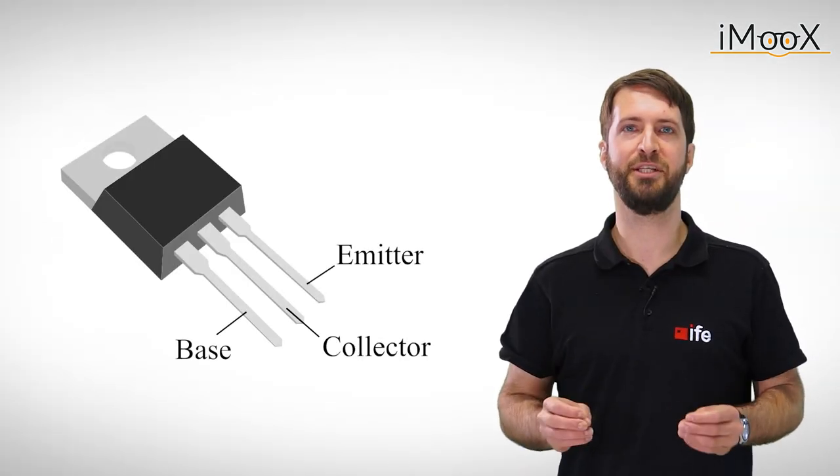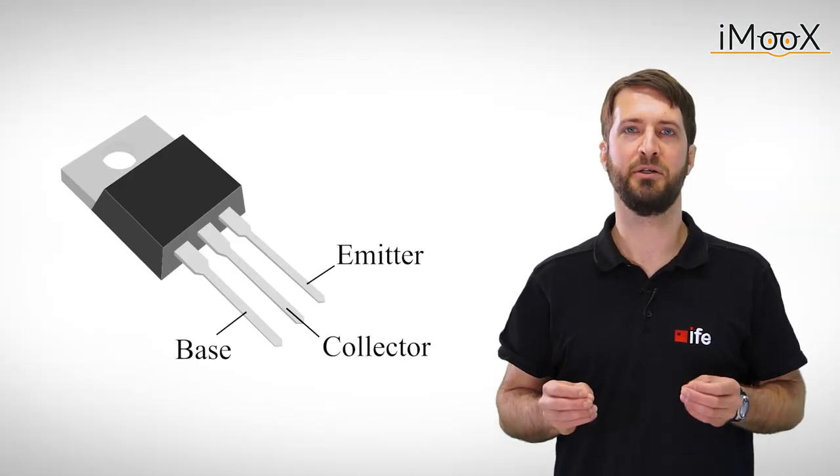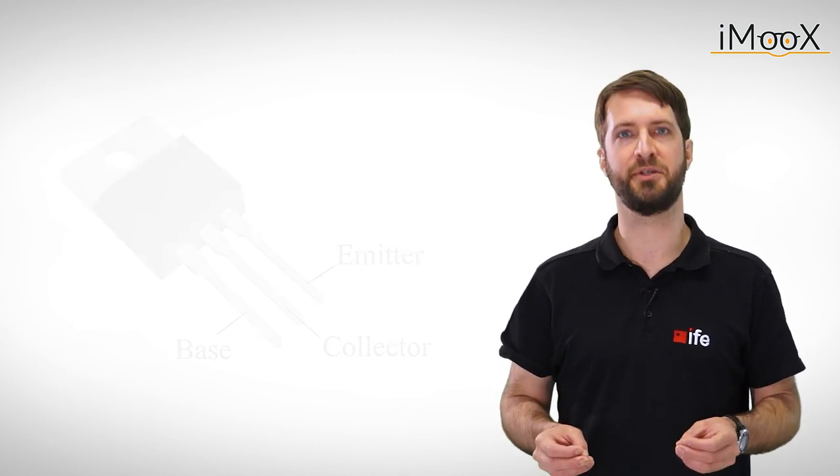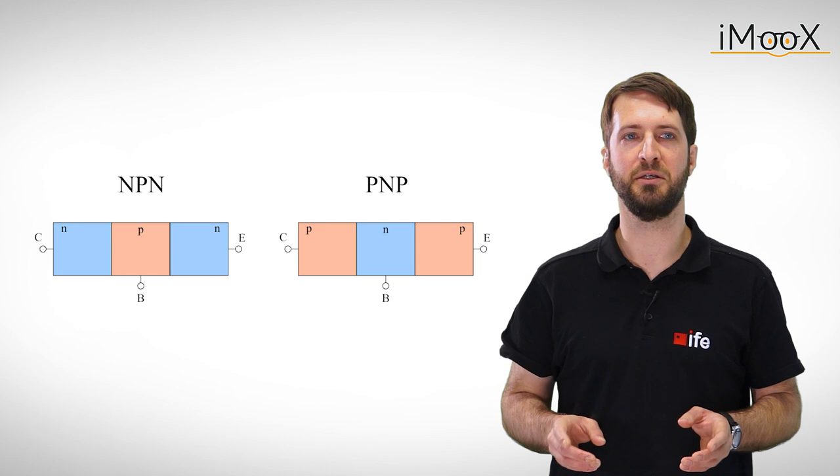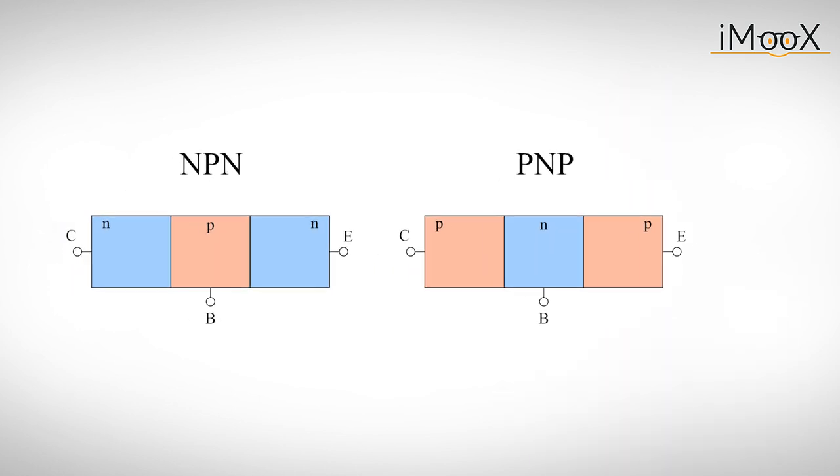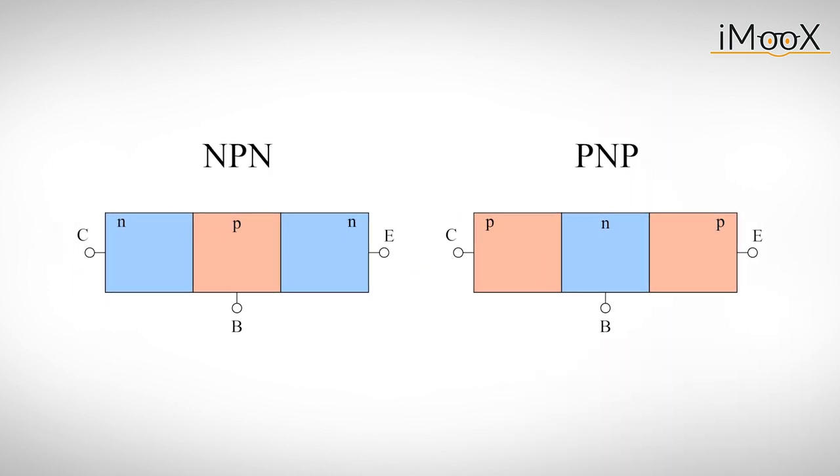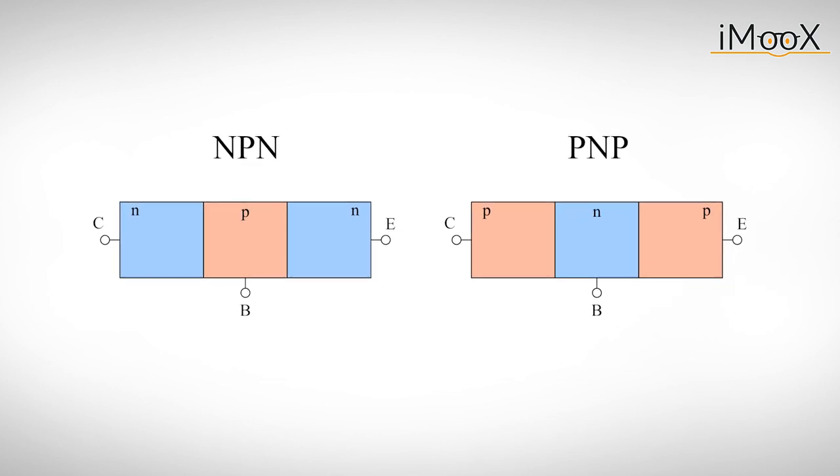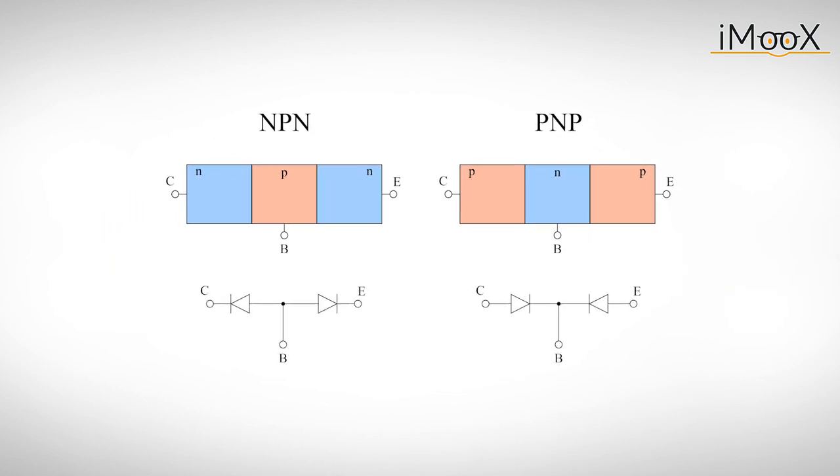A transistor has three terminals called emitter, collector and base. There are two kinds of bipolar transistors, NPN and PNP. You can find a detailed explanation of the physics behind them in the links below. But for now we want to concentrate on these highly simplified diode circuits for a basic understanding of their functionality. More precisely we will focus on the NPN transistor.